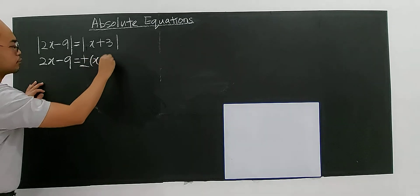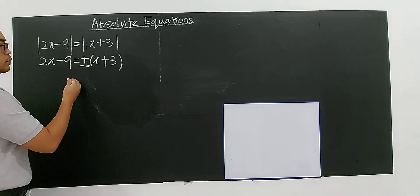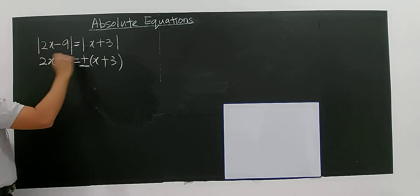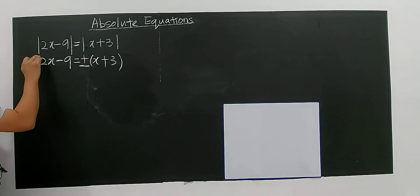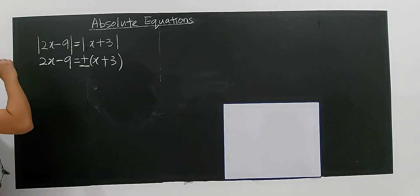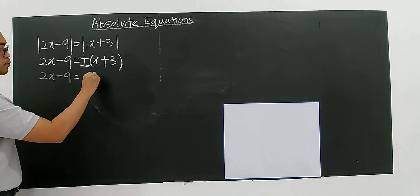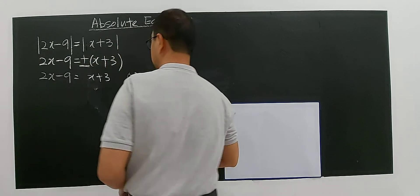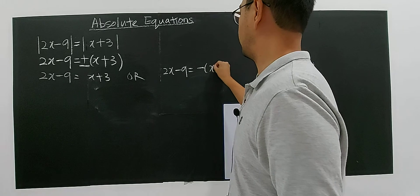You put plus or minus on the x plus 3 bracket — don't forget. So you just focus on this equation: 2x minus 9 equals to x plus 3, or you may put plus minus on the other side. So solving this equation: 2x minus 9 equals to x plus 3, or 2x minus 9 equals to negative of x plus 3.